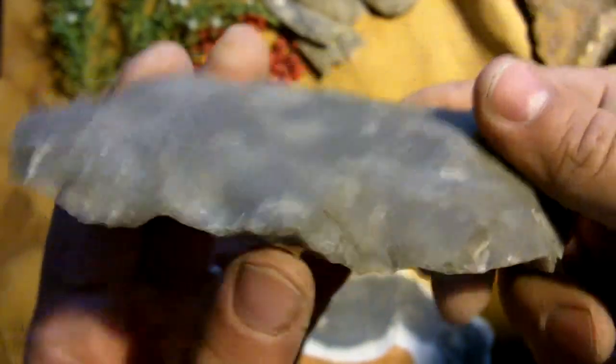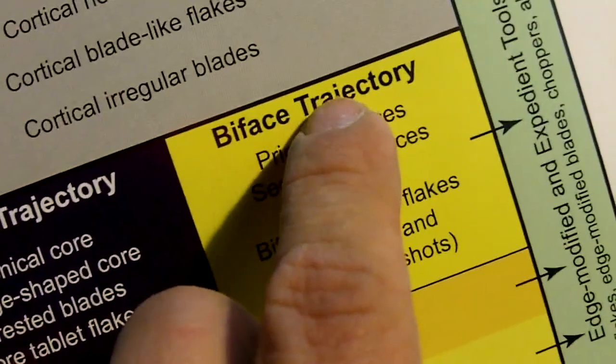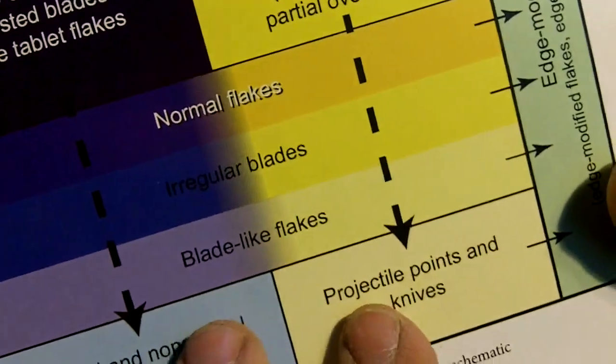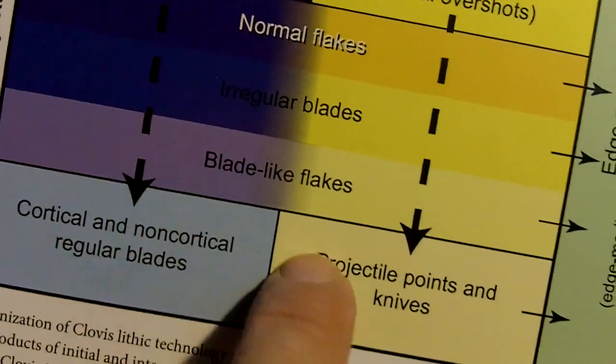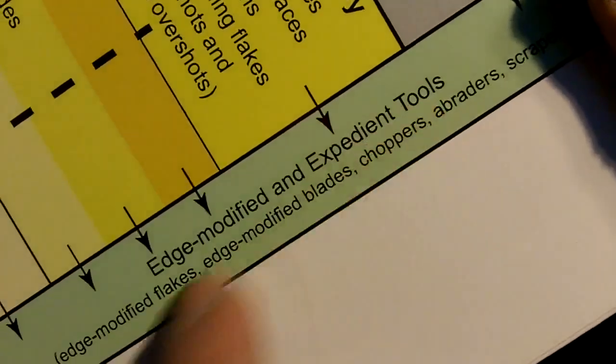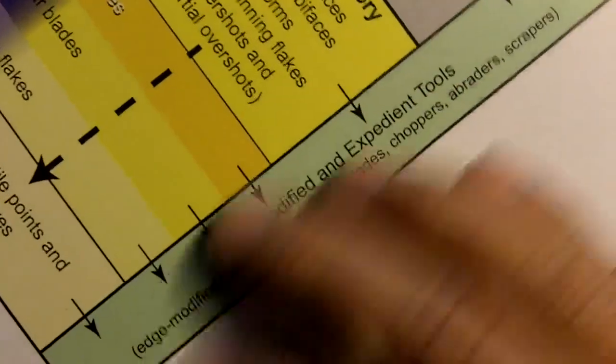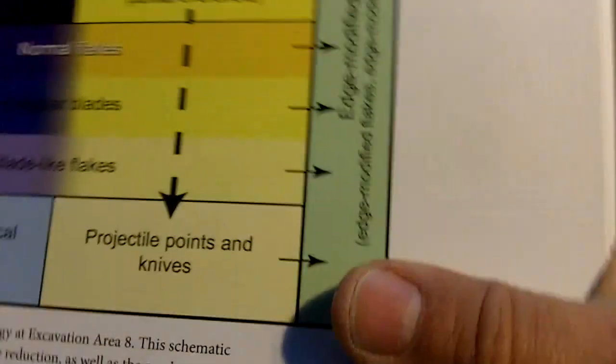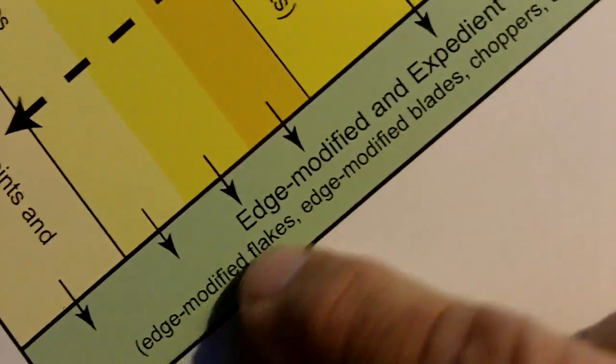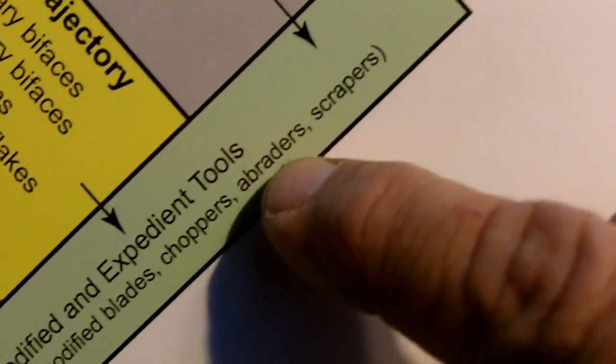I've read a lot on different forums about Clovis points and this is something new to me — I didn't realize they actually classified these trajectories separately. There's a blade trajectory and a biface trajectory, and they were separate; they didn't mix the two together. After these two different types were expended or used up, they would make what they call edge-modified and expedient tools from those — edge-modified flakes, edge-modified blades, choppers, scrapers, and so on.